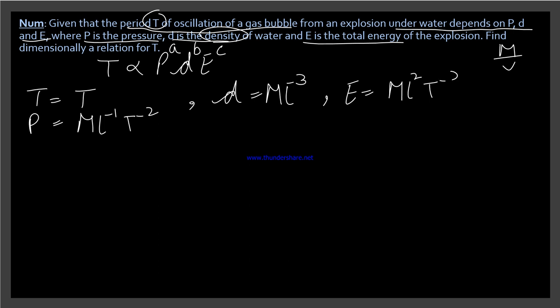And E is M L^2 T^-2. Is it clear? So these dimensional formulas we already know. Now put the values. In their place, we will put values. So T's value will be M^0 L^0 T^1. Is that clear?